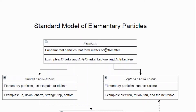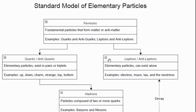Fermions are fundamental particles that form matter or antimatter. The examples we have are the quarks and antiquarks, and the leptons and antileptons. Quarks are particles that can only exist in pairs or triplets. There are six of them: the up, down, charm, strange, top, and bottom quarks. And then we have the six antiquarks: anti-up, anti-down, anti-charm, anti-strange, anti-top, and anti-bottom.